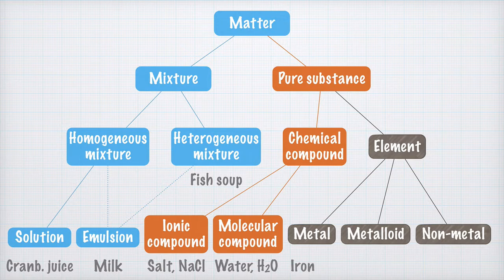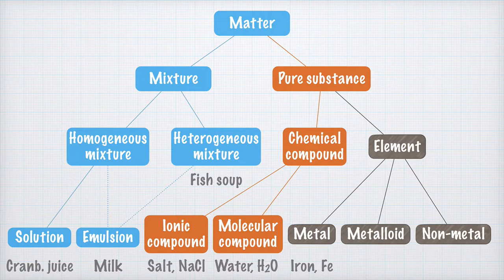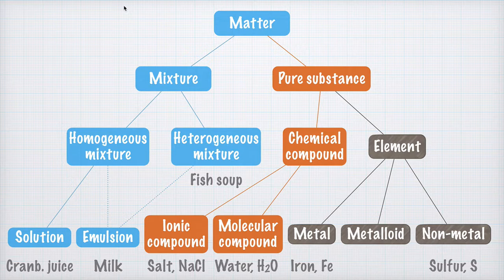Let's have some examples of that too. Iron, with the chemical symbol Fe, is a typical metal that I'm sure you are already familiar with. Sulfur, S, is a typical non-metal. And an element that is a metalloid is silicon, with the chemical symbol Si.